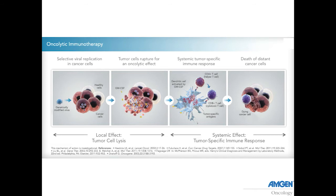The prototypical example is T-VEC. The idea is that the virus preferentially infects dividing cells, replicates quickly, and lyses the cell. Upon lysis, it expresses cytokines — for example, GM-CSF, which is engineered into the virus — resulting in activation of antigen-presenting cells in the presence of tissue lysates, leading to T-cell activation and clearance of the tumor not only at the injection site but also at distant sites.